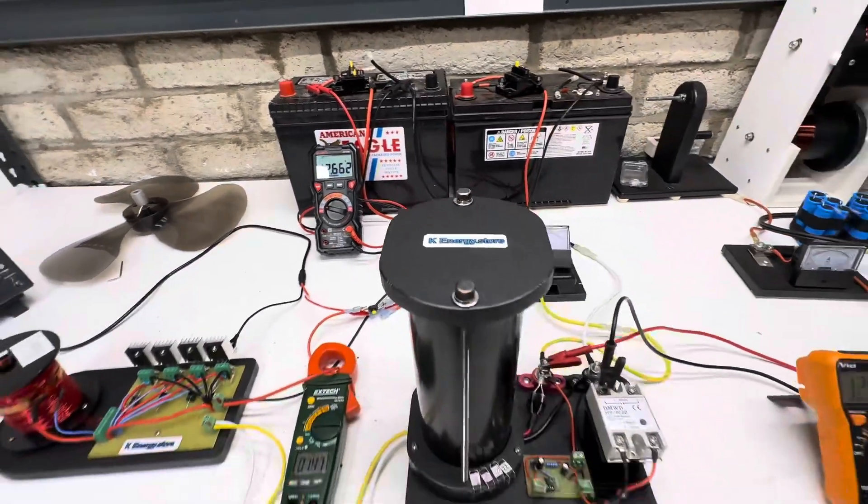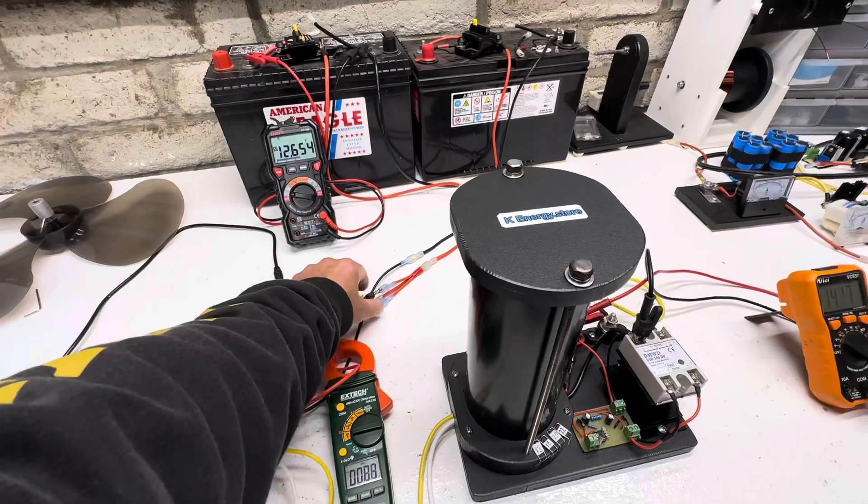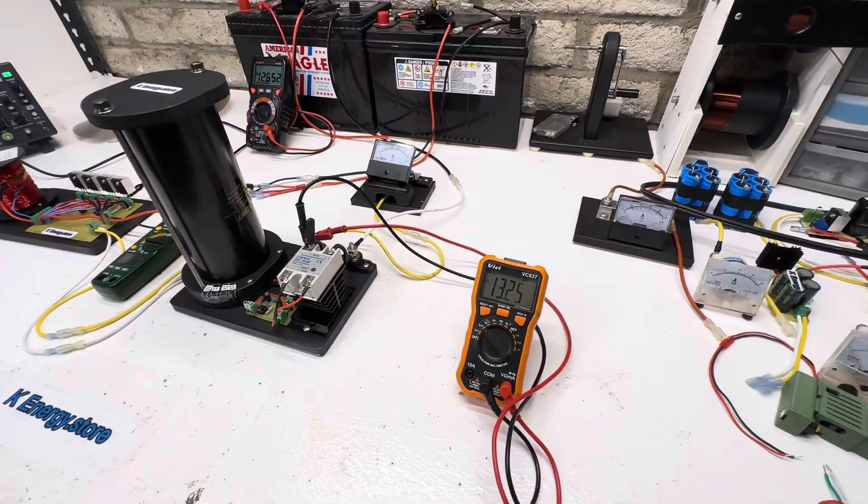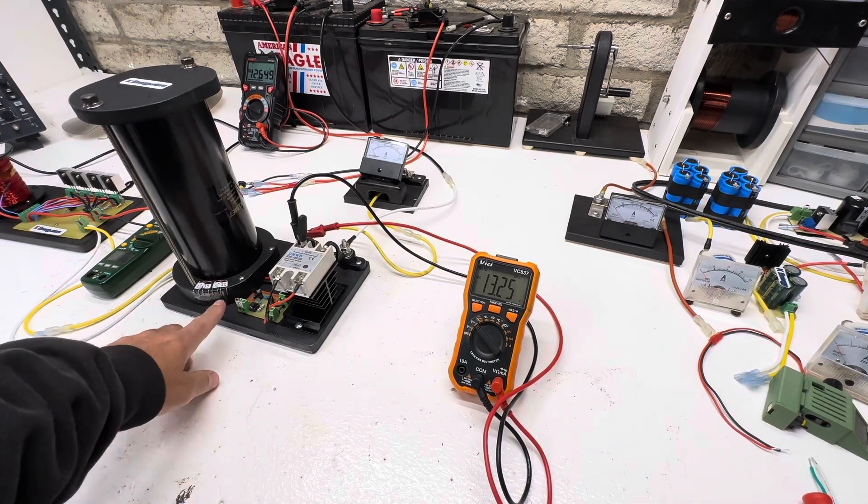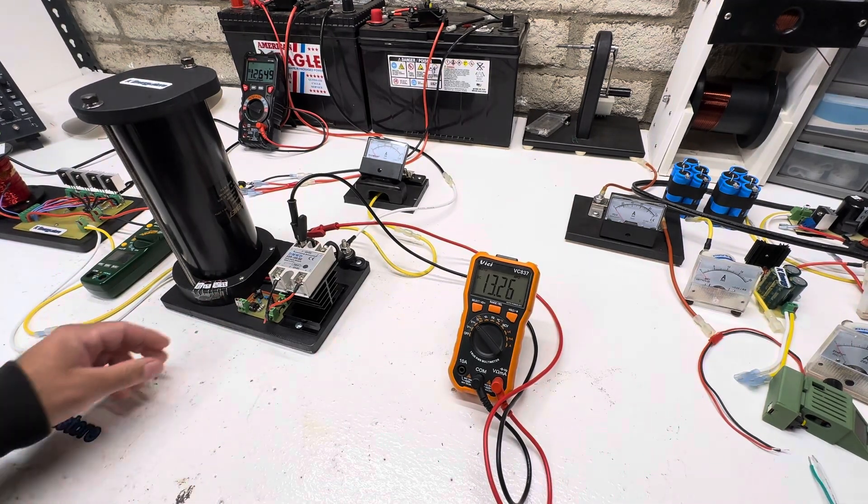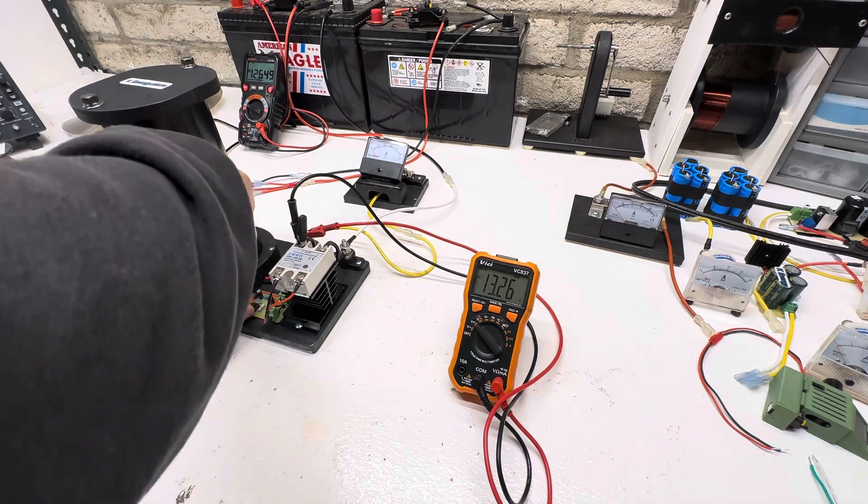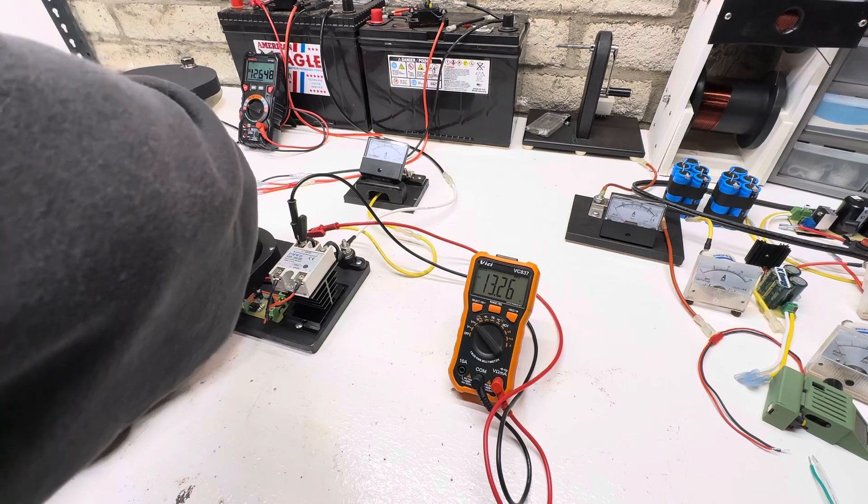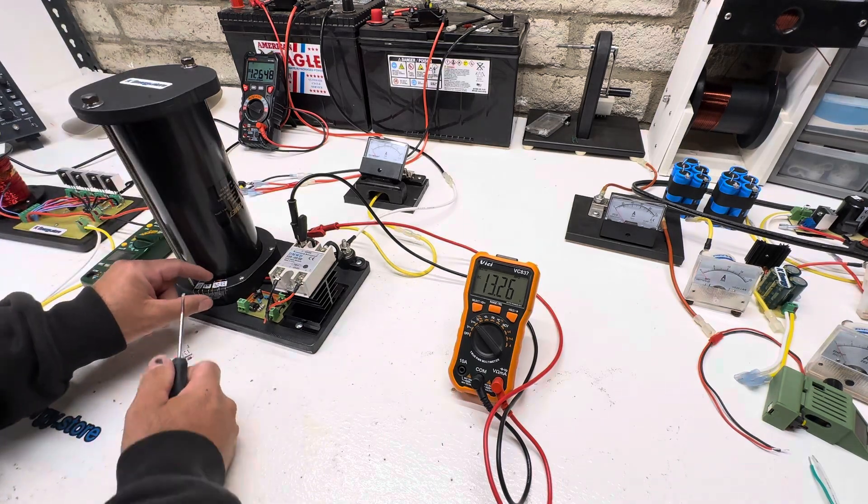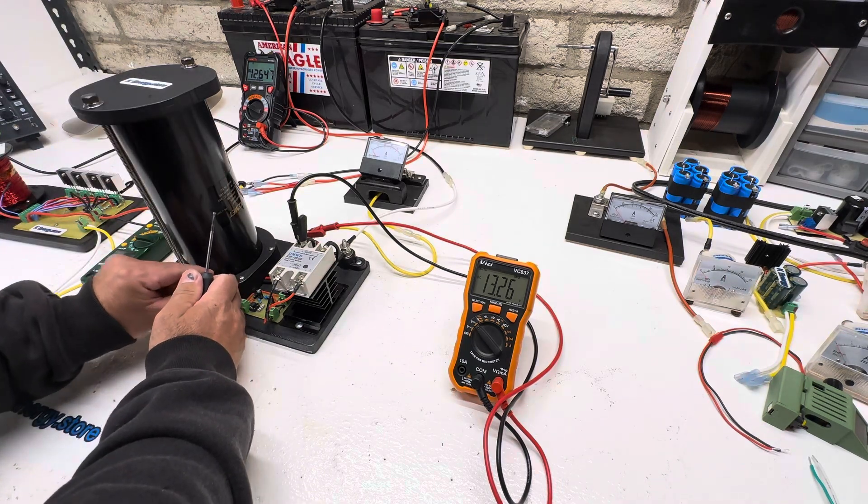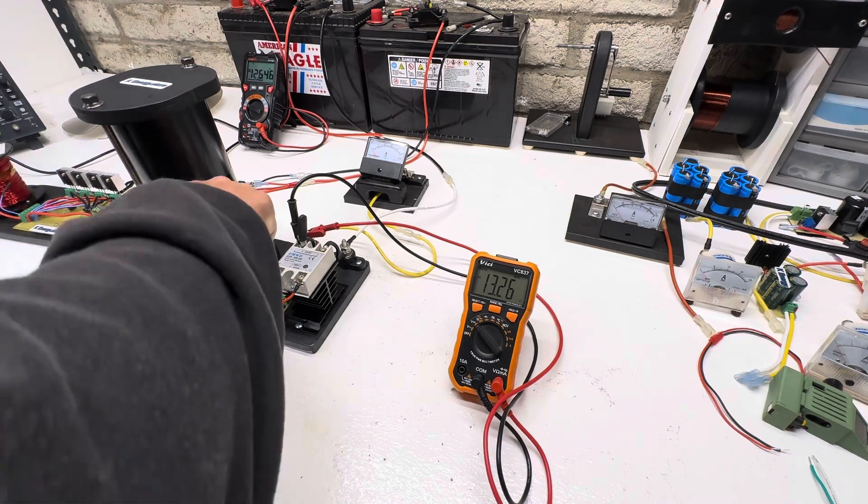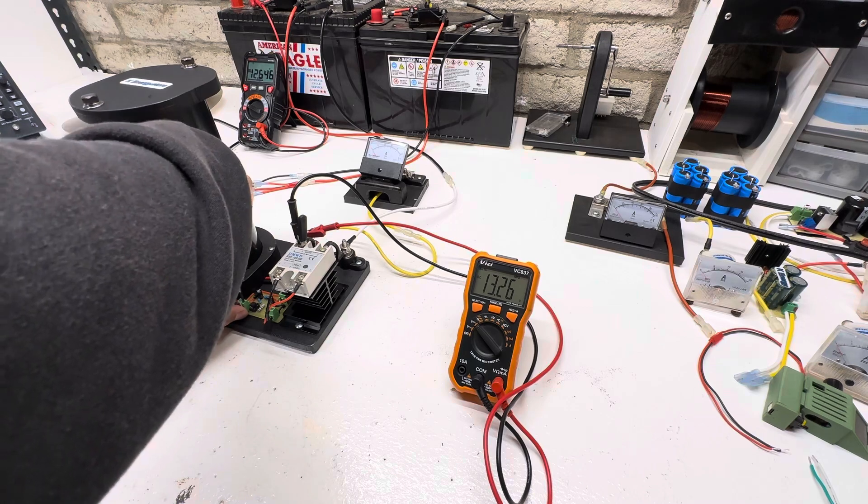So what we're going to do now is we're going to shut this off, and I'm going to switch this out. So this has all these different settings. So right now we're on 13, so we'll take out this 13-volt zener. And we're going to put in this 20-volt right here. So this is going to give us a lot more amperage in it, but it takes more time to charge because the voltage is higher.